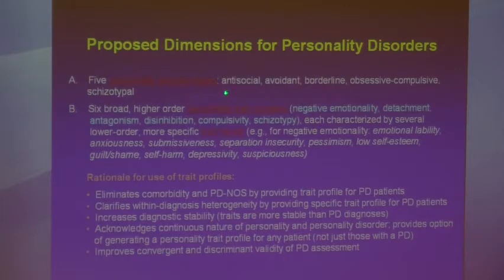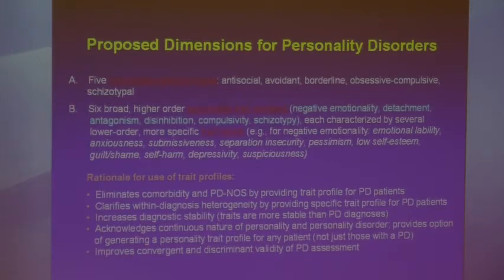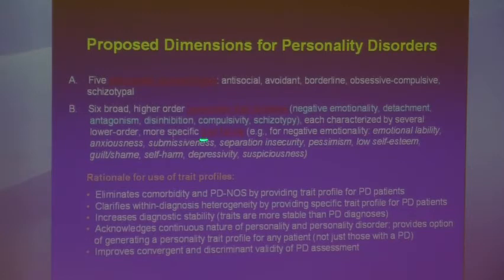The five types would be antisocial, avoidant, borderline, obsessive-compulsive, and schizotypal. In addition, there would be six broad higher-order personality trait domains. These are based substantially on the NEO five-factor model of personality, although that model doesn't represent compulsivity well — so compulsivity was added and broadened — and it doesn't reflect schizotypy well, so that was added too.